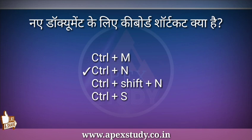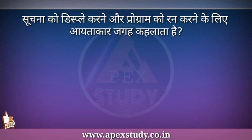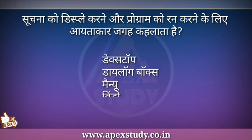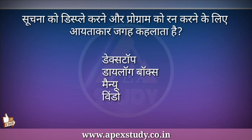अगला प्रश्न: सूचना को display करने और program को run करने के लिए आयताकार जगह क्या कहलाती है? Options: Desktop, Dialogue Box, Menu, Window। इसे Window कहलाता है।